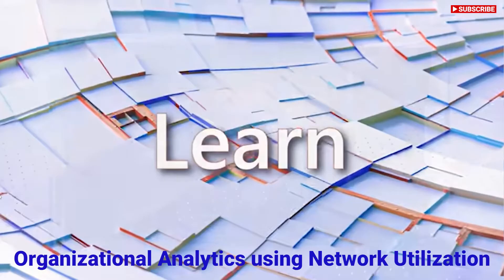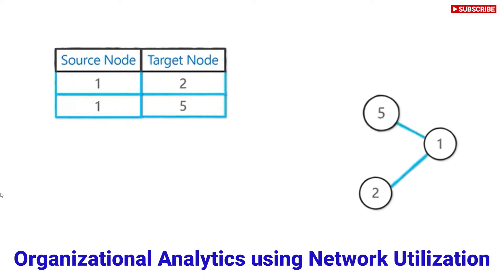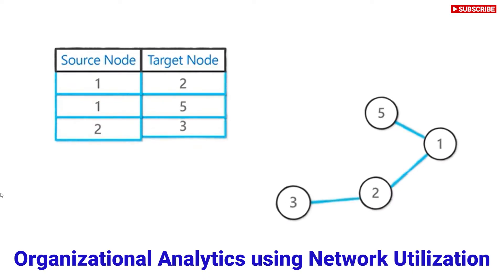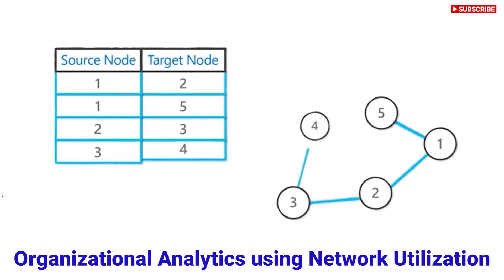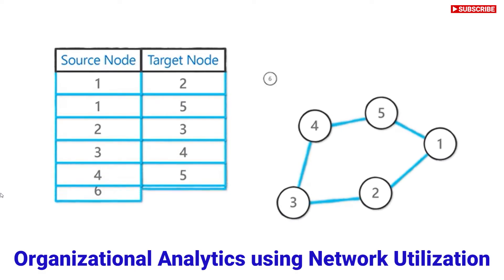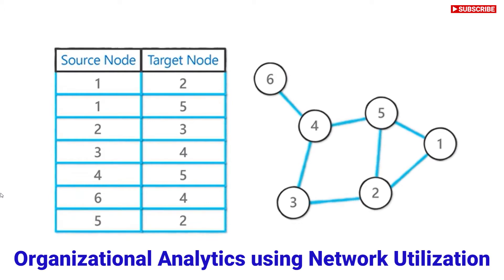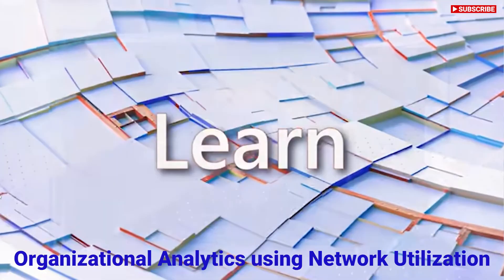To understand a network, it's first important to take a look at how they are constructed. On this slide, what we can see on the left-hand side is a list of what are called edges — this gives you a source node and a target node, and you'll notice that the two are connected. On the right-hand side of the slide, we can see a visual depiction of this edge list that represents the corresponding graph.